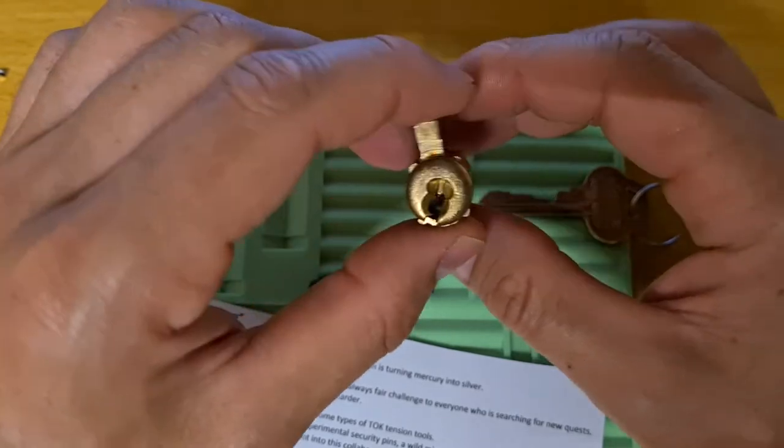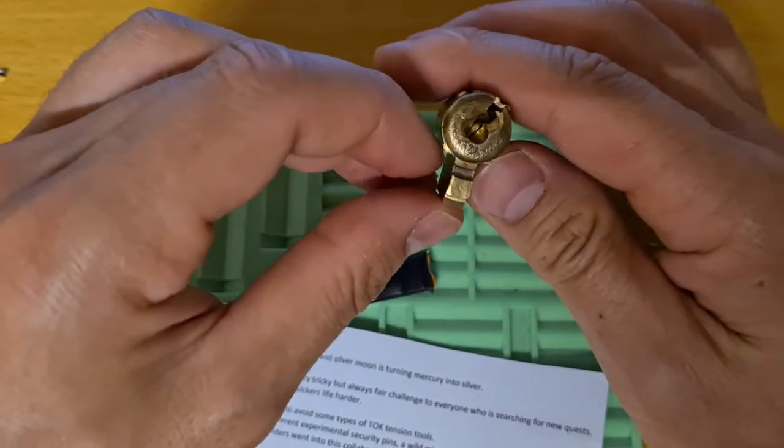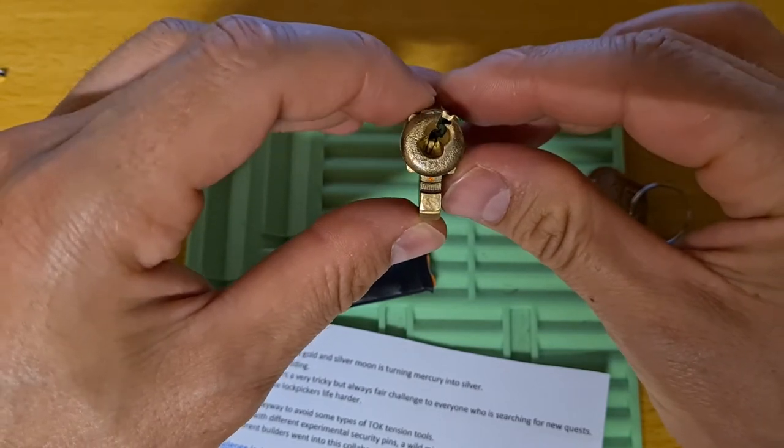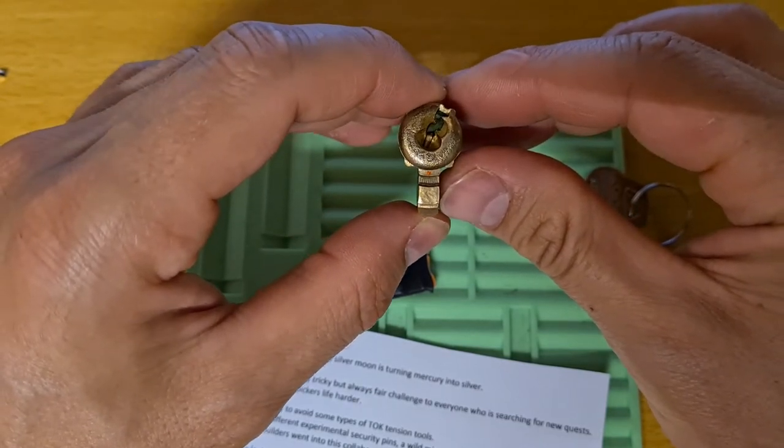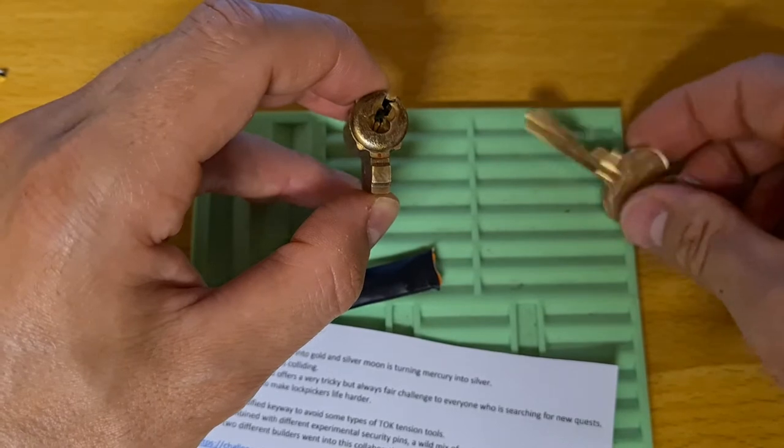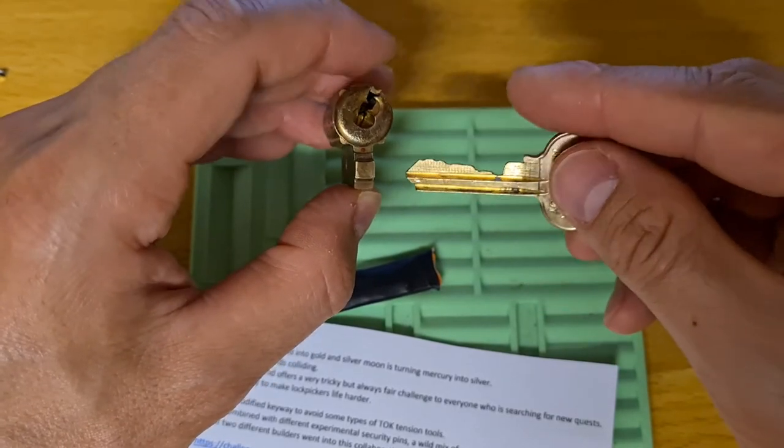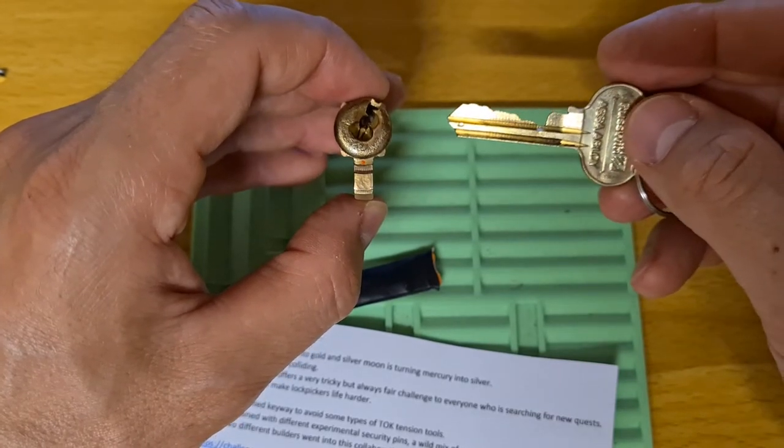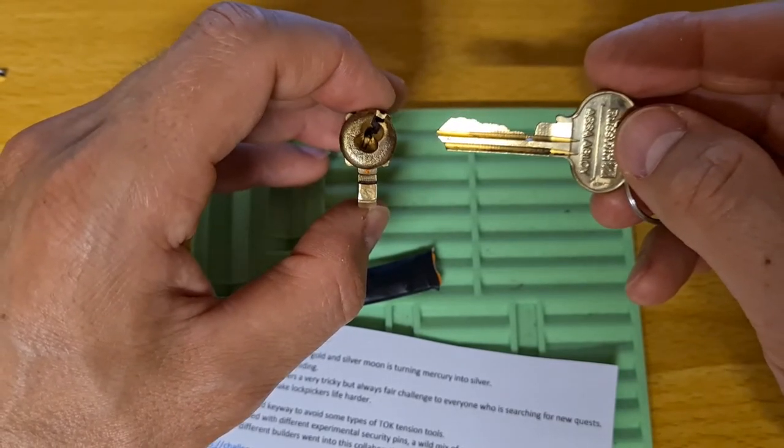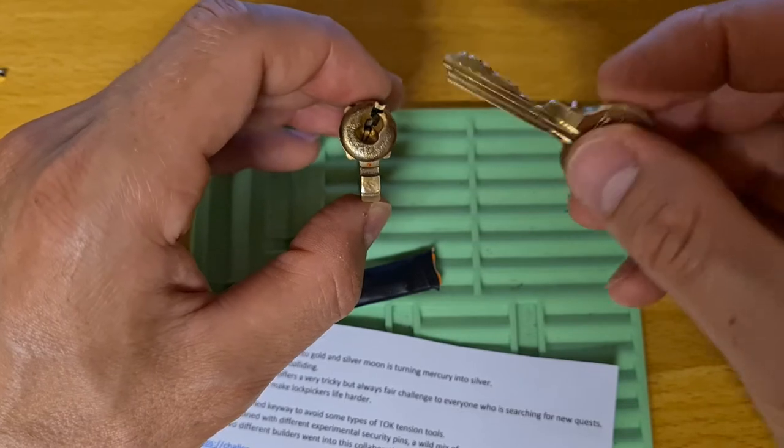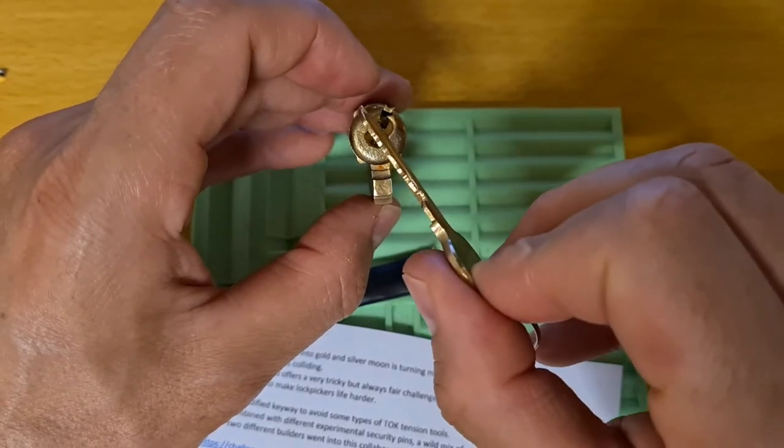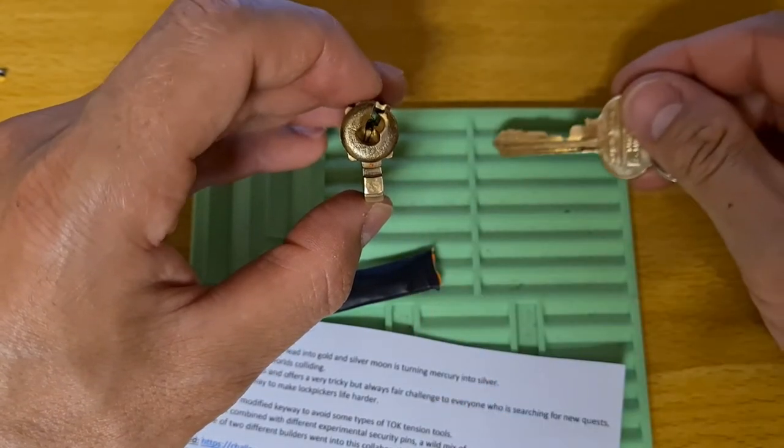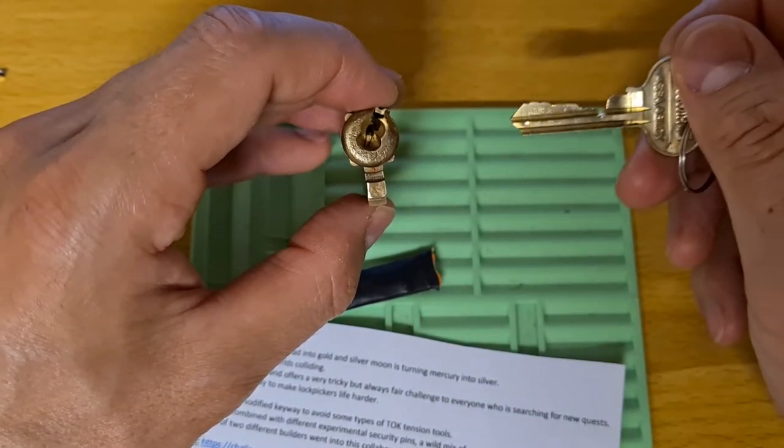It is the most nasty lock I have ever tried to pick. At some point I had to have a look at the key because I just had no idea what's going on. I was able to get this deep false set before that but that's pretty much as far as I got. I could get the same false set in the different direction but nothing else.